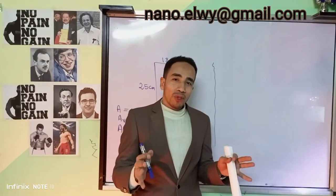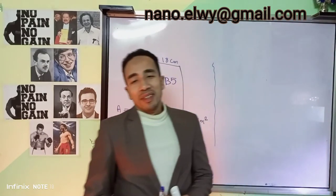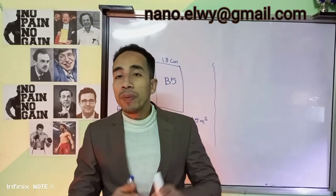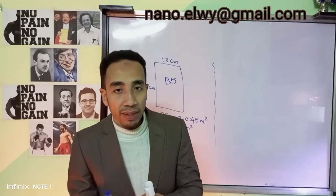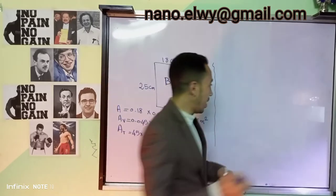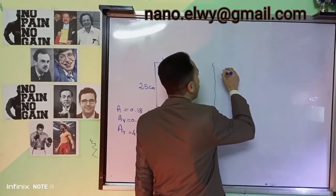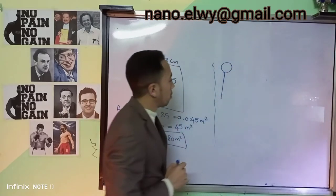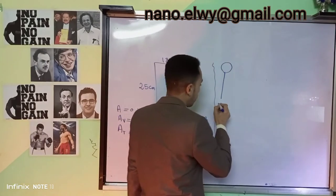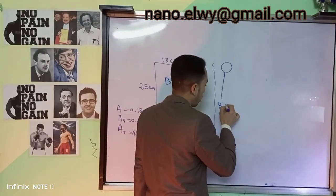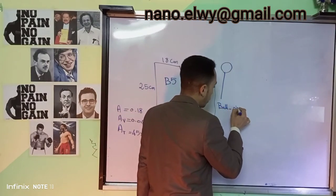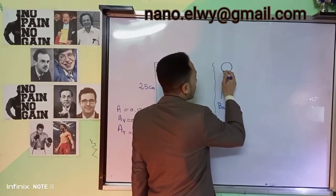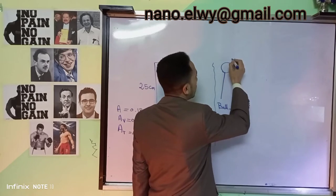We have to keep in mind that there are many types of pins. In this argument, we shall consider two main types: the ball pin and the T-pin. Let's start with the ball pin — like this. This is called the ball pin, and the area of its head is a sphere.